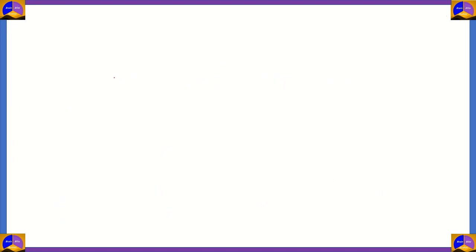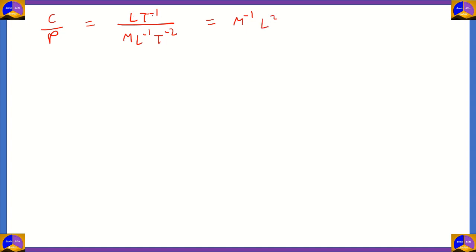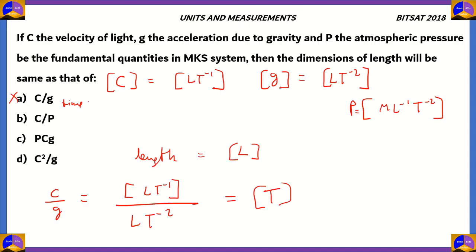What about option B — c divided by p? That means we have to divide L·t⁻¹ by M·L⁻¹·t⁻². Mass is in the denominator, so that's M⁻¹, and L⁻¹ goes to the numerator — so that means L. L times L is L squared, and then t⁻¹ in the numerator with t⁻² in the denominator gives a resultant of just t. So this is not equal to length, which means option B is also incorrect.